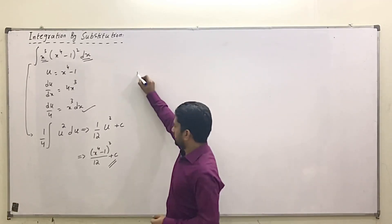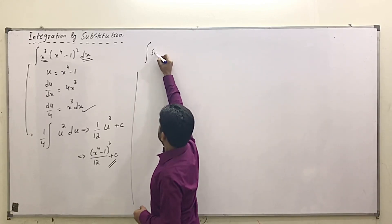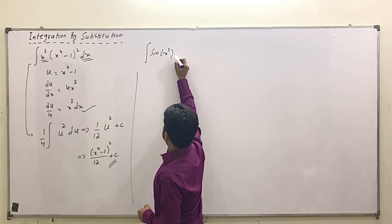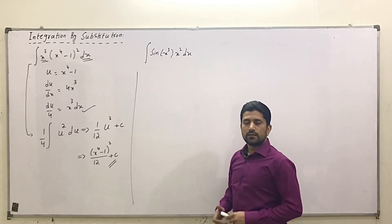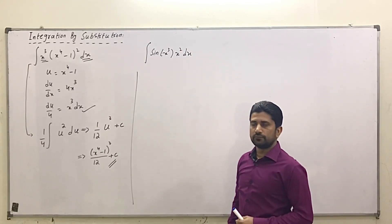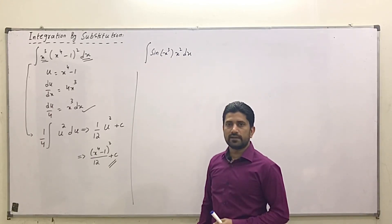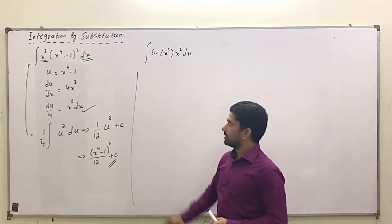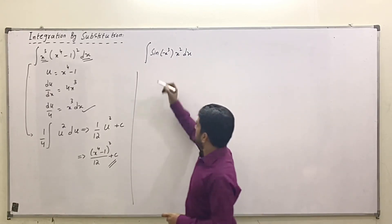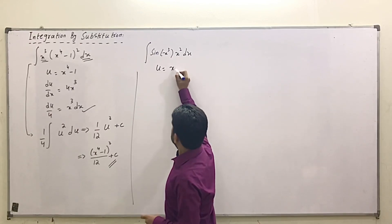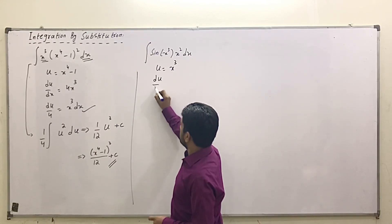Let's do one more example: integrate sin(x³) · x² dx. Again we have to identify u. If I select u = x², then its derivative will be 2x, which is not present in this integral. So I select u = x³.